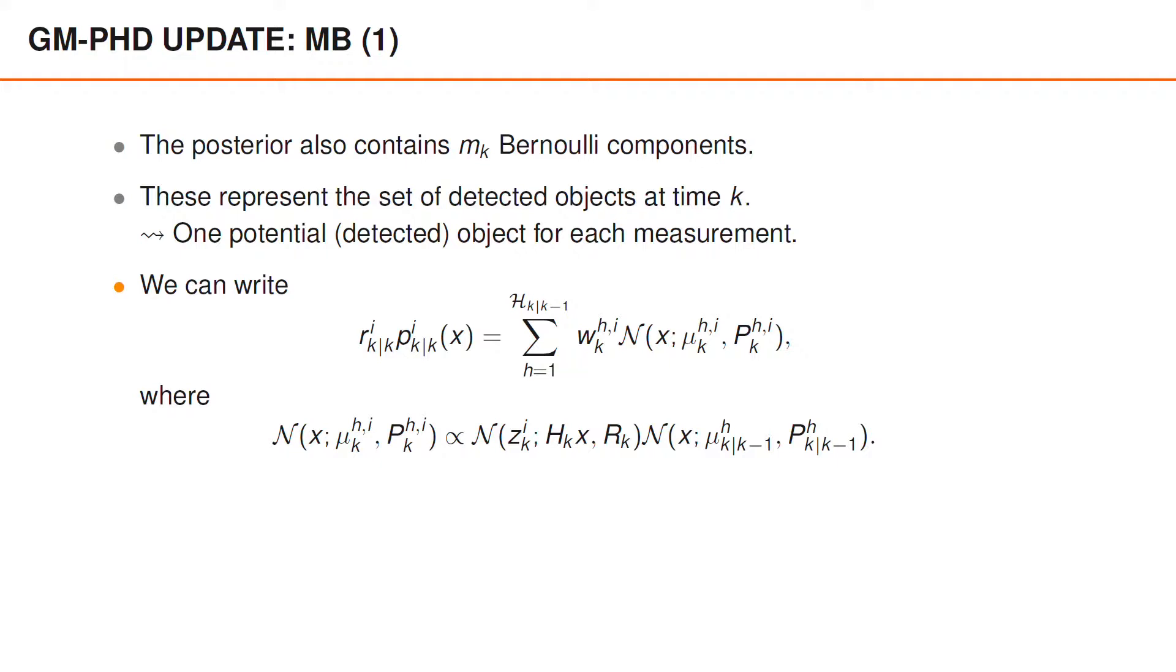It turns out that we can write this product as a Gaussian mixture, where we sum over h from 1 to capital Hk given k minus 1, over a weight that depends on both i and h, and a Gaussian density whose mean and covariance also depends on both i and h. The reason that we obtain a mixture for every measurement is, of course, that the predicted PHD is itself a mixture.